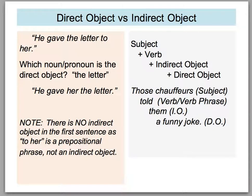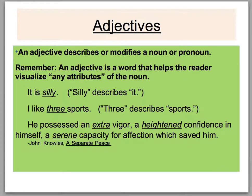We'll find more opportunities for examples as we move along. Adjectives: an adjective describes or modifies a noun or pronoun. An adjective helps the reader visualize any attributes of the noun, possibly using your five senses. For example: it is smelly — smelly is an adjective. It is silly — silly is an adjective. It is funny.